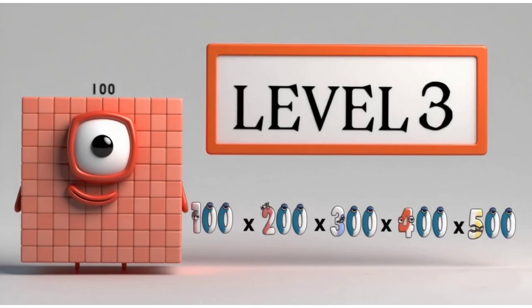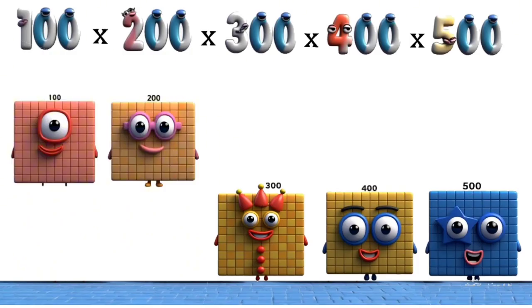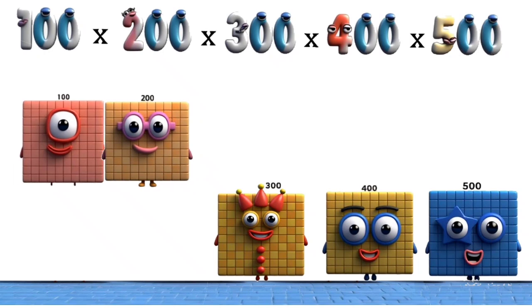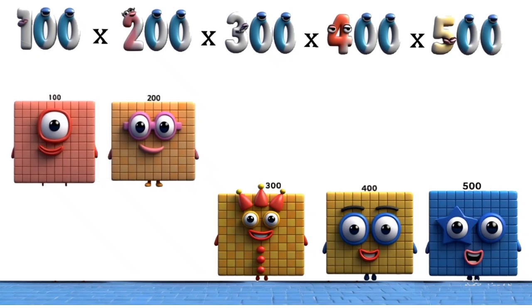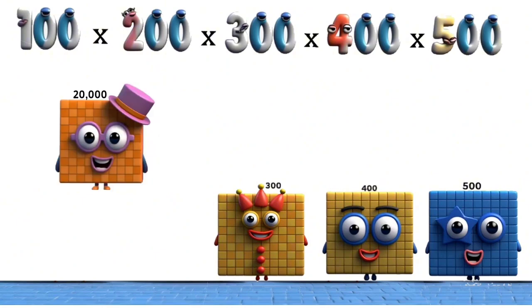Level 3. Number Blocks 100 times 200 to 500. 100 times 200 equals 20,000.